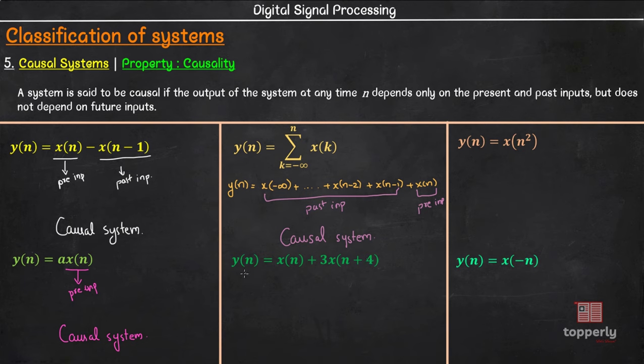Next system is y of n equal to x of n plus 3 into x of n plus 4. Let us first analyze the input terms in the system equation. x of n here is present input. Coming to x of n plus 4, this is a future input.